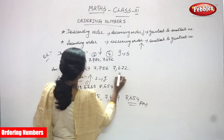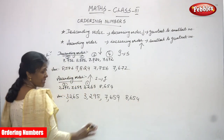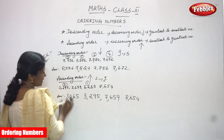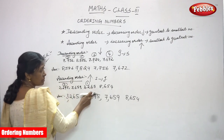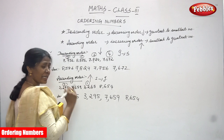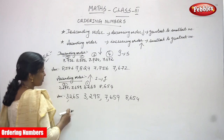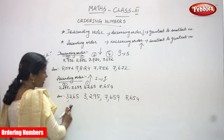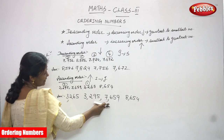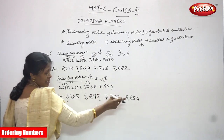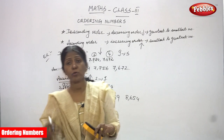So the final ascending order is: 3265 is the smallest, 3295 is the first greater number, 7659 is the second greater number, and 8654 is the greatest number. This is the correct answer. For four-digit numbers, concentrate on the thousands place first, then hundreds, then tens to determine the order.